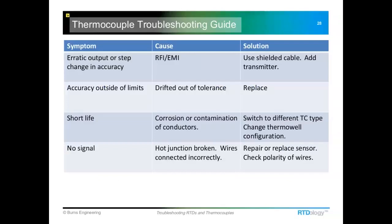Thermocouples are even more susceptible to RFI and EMI than RTDs. We're only measuring a millivolt signal, and it doesn't take much interference to cause it to be very erratic or cause a step change in temperature. Ways around this include using a good shielded cable grounded at the signal conditioner end with the shield open at the temperature probe end so it can drain noise away. Another solution is to put a transmitter at the temperature measurement location and run a current or voltage signal back to your control system — those are much more resistant to RFI/EMI interference.